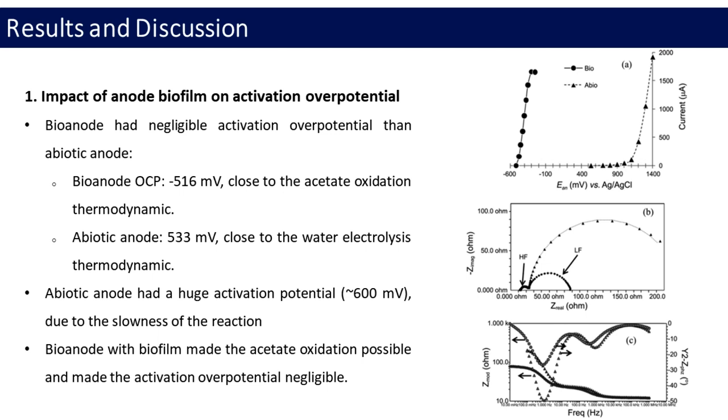Measured OCPs of the bioanode, 516 mV, and the abiotic anode, 533 mV, were close to the acetate oxidation and the water electrolysis thermodynamics. When abiotic anode had a huge activation potential due to the slowness of reaction, anode biofilm formation of bioanode made the acetate oxidation possible and made activation over potential negligible when it comes to the acetate oxidation.